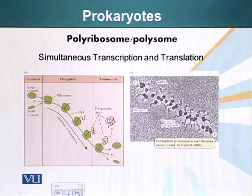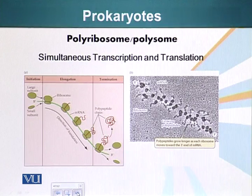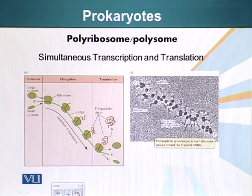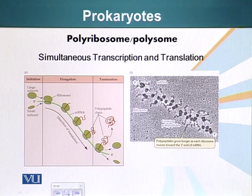Before we talk about how proteins are targeted, let me tell you a little bit about prokaryotes — what happens to them after the proteins are made. As we know, there are no membrane-bound organelles. Transcription and translation are happening out in the cytoplasm, and in the cytoplasm we also have the ribosomes. So in prokaryotes, like bacterial cells, as the RNA is elongating, the ribosomes start to assemble on them while the messenger RNA is being made. The protein starts to be formed even though the entire messenger RNA has not been transcribed yet.